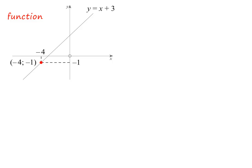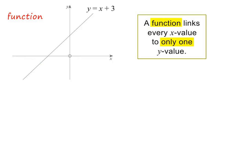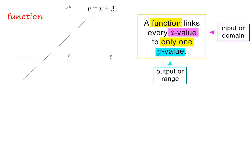This will be true for all points on the line. In words, we can say that a function links every x value to only one y value. They often refer to the x values as the input values, or the domain. And the y values are called the output values, or the range. So a function links each element in the domain to only one element in the range.